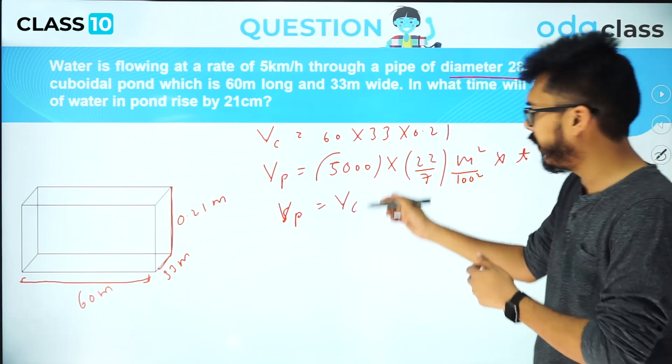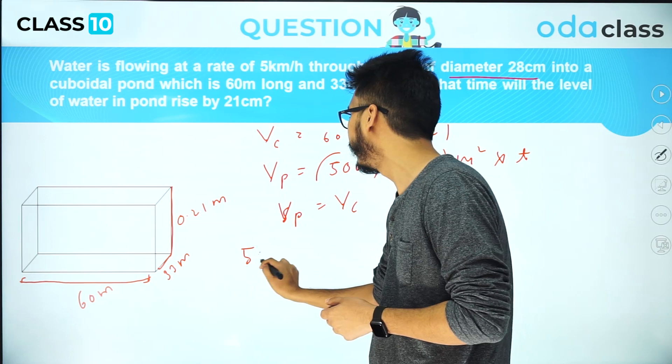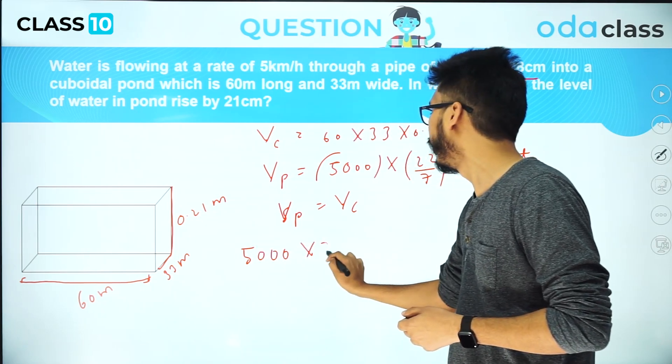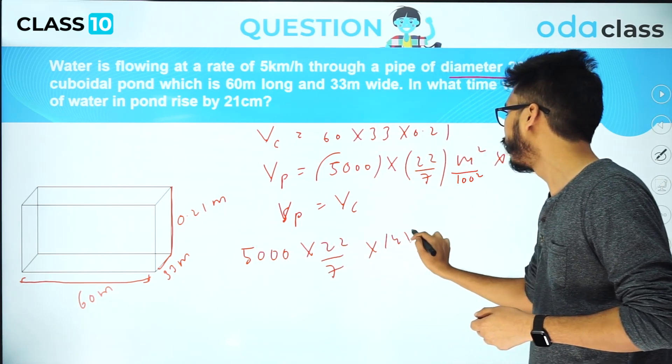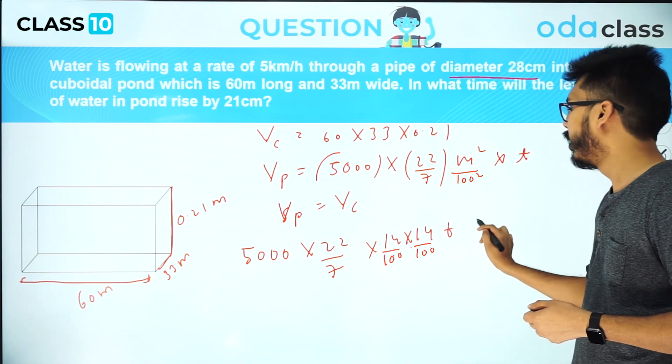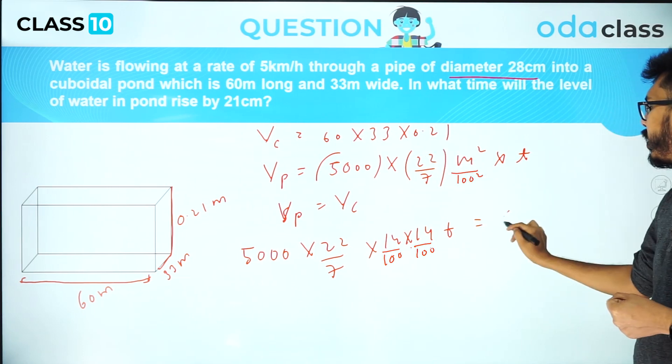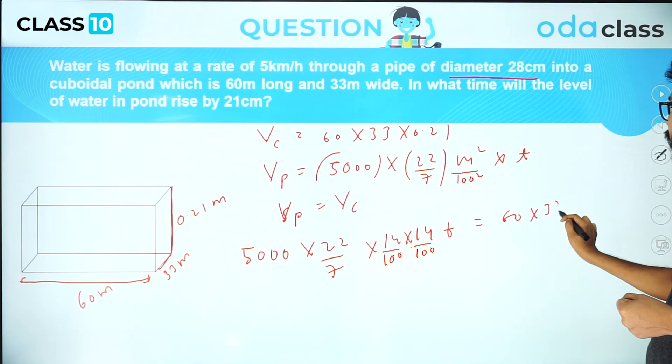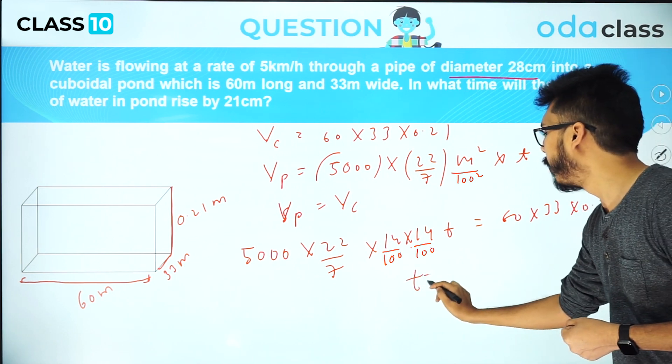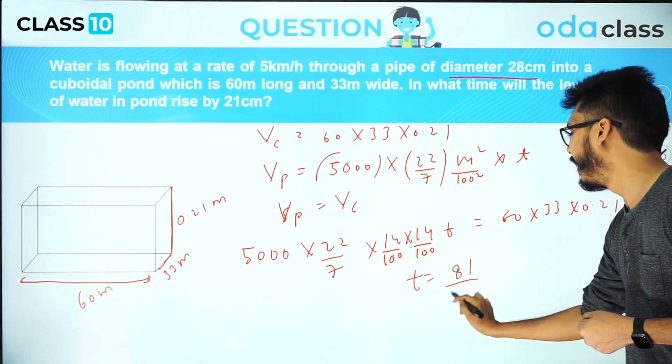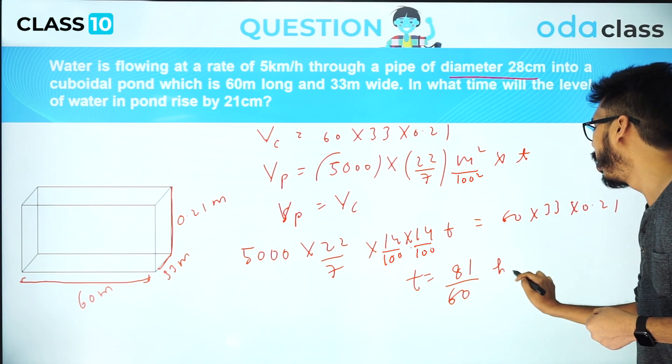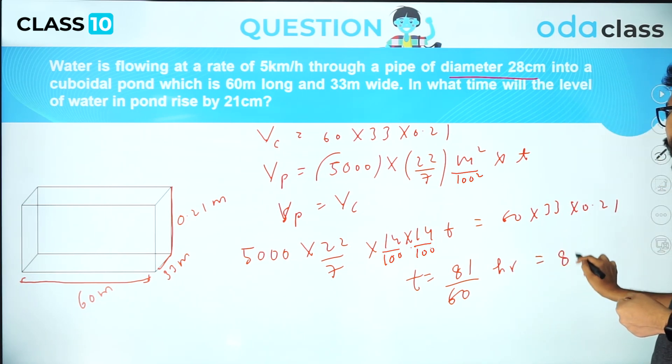Let's simplify this. You get 5000 × 22/7 × 14 × 14 × t = 60 × 33 × 0.21. From here time will come out to be 81/60 hour or you could write it as 81 minutes.